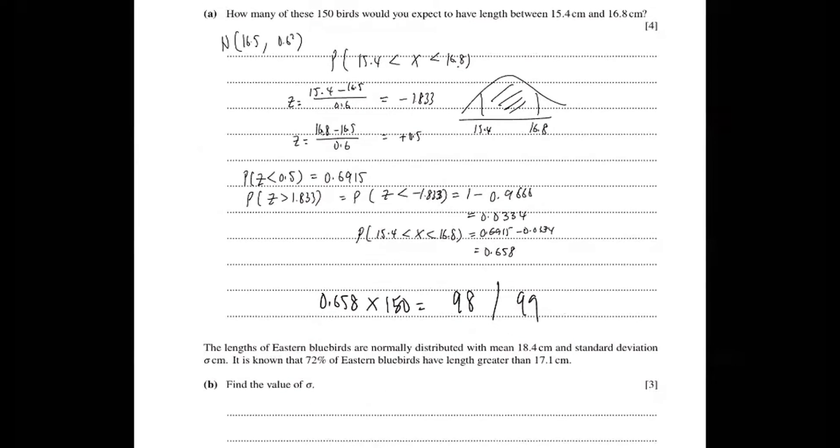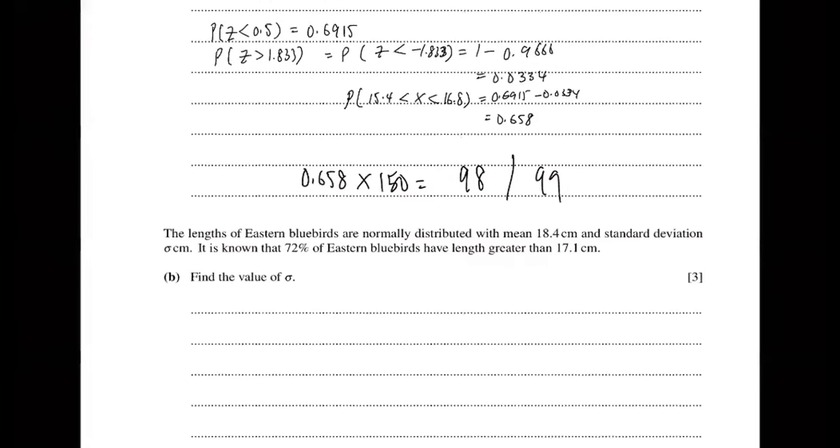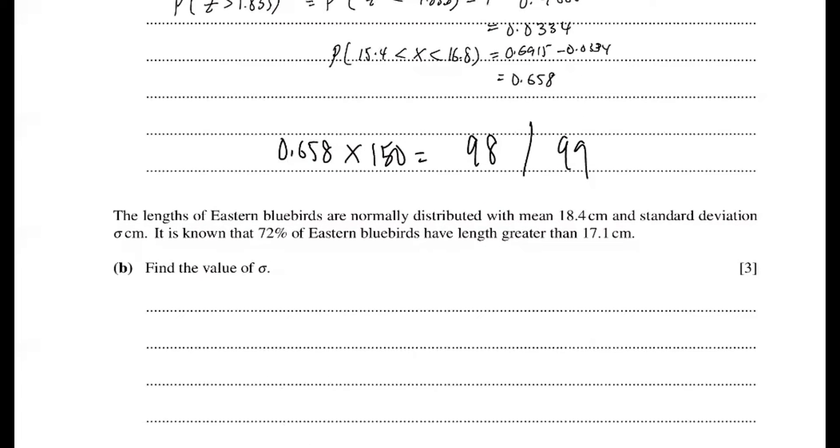Next question, they will ask you about how to find the standard deviation, it's not the mean. You can see the wrong thing. Quite easy, right? Like what we do just now. Draw a diagram so that you know where is the shaded area. So more than 17.1 cm equals 0.72.